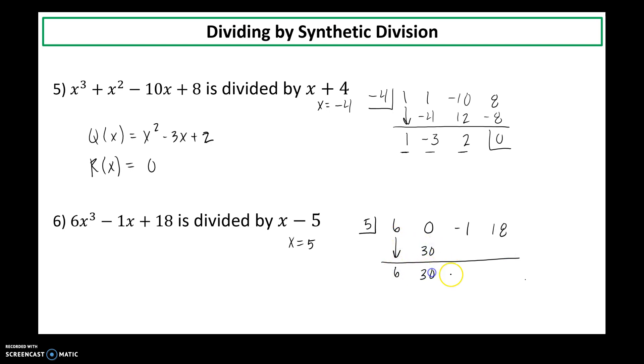Multiply. Add. Multiply. Add. Now when I multiply 5 times 149, that's 5 times 100. Times 5 times 40. Or plus 5 times 40. Plus 5 times 9. So when I add those together, I get a product of 745. And now when I add these to get my remainder, my remainder is 763.